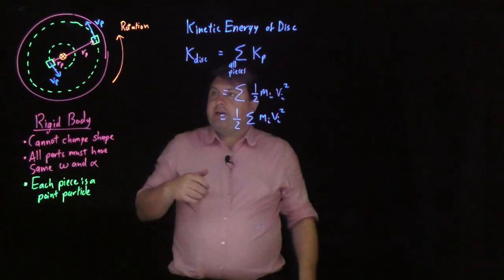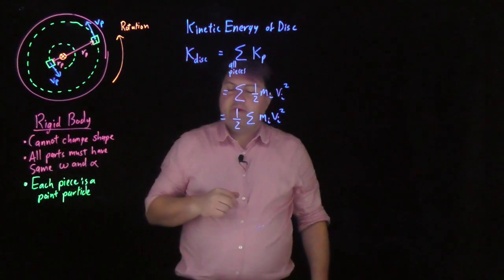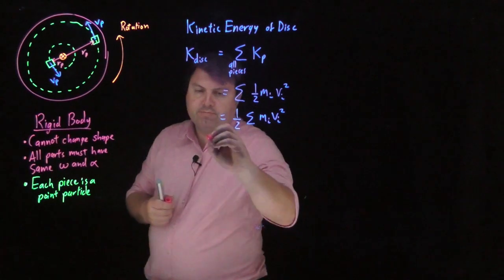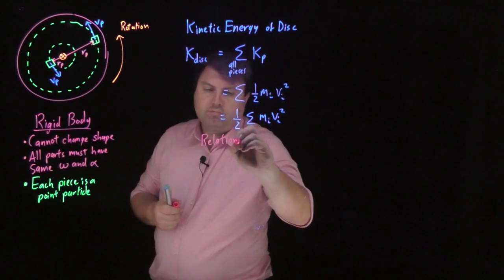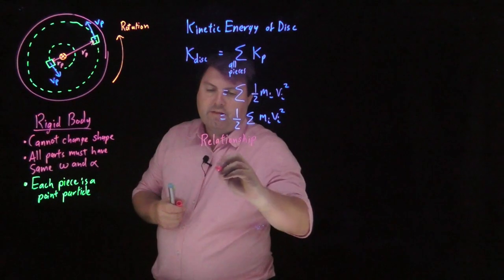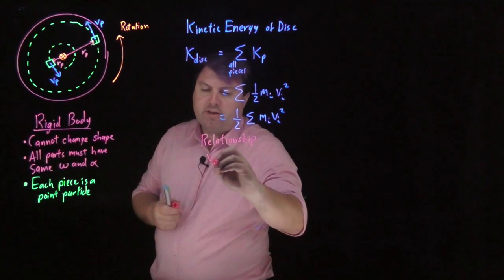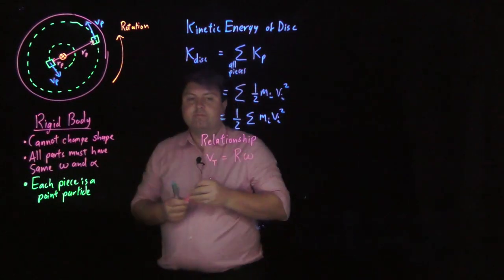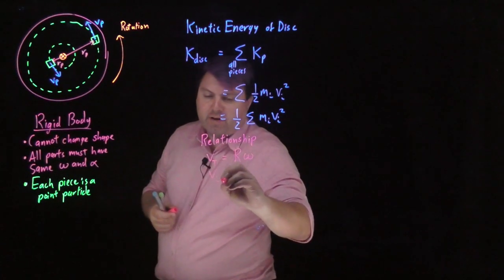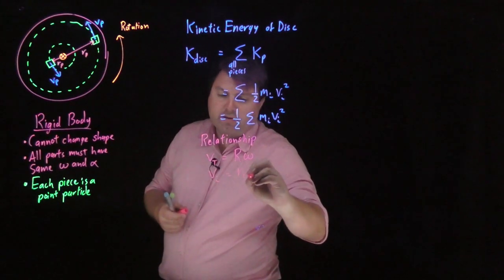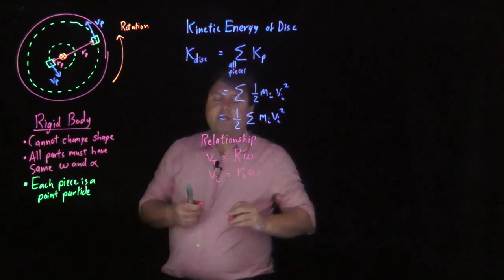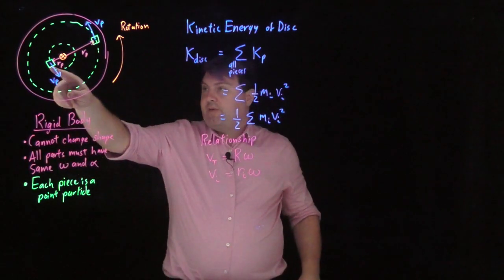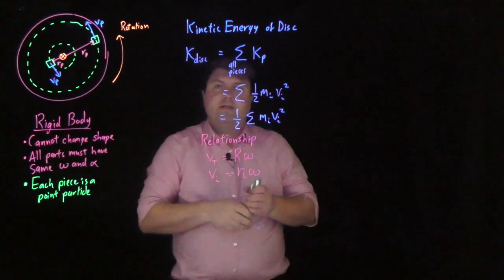But what I can do is, I know that the parts must have the same omega, so I can use my old relationship that the velocity tangential is equal to r times omega. So in this case, I would say that my v_i is equal to r_i times omega. And what's nice is that my omega is going to be the same for this piece and this piece and any other piece in my disk.